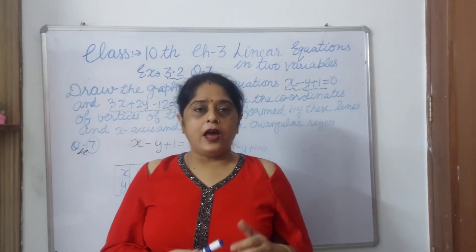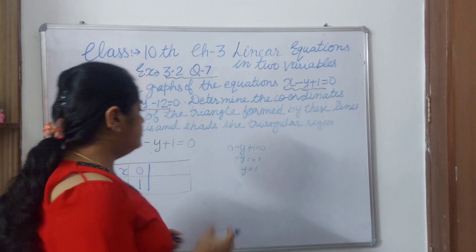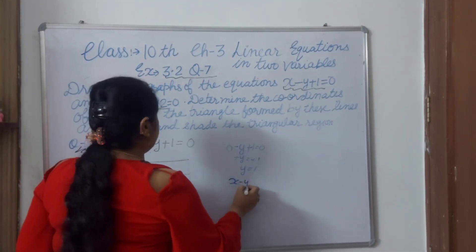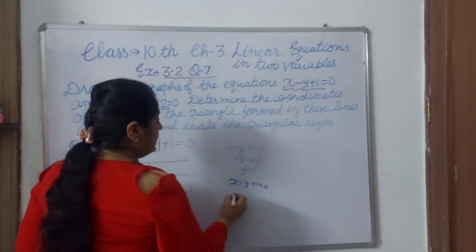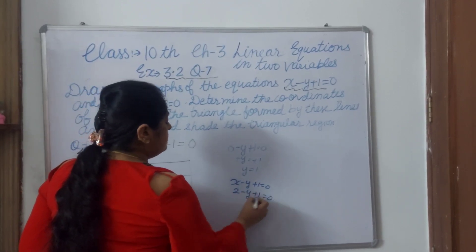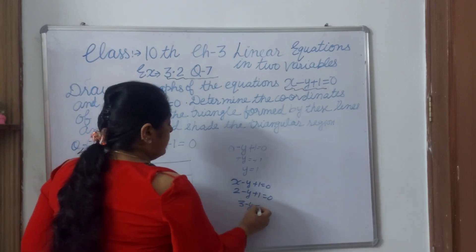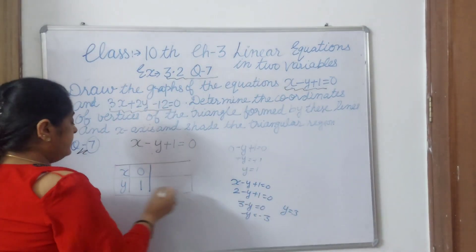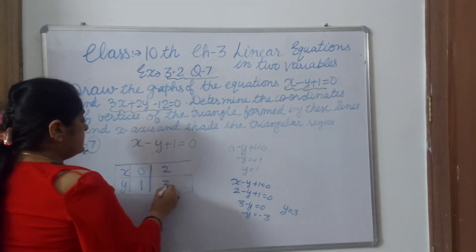I am taking 2. Now you can take x value 2, any value you can take. x minus y plus 1 equals 0. I am taking x as 2, so 2 minus y plus 1 equals... 3 minus y equals 0. Minus y equals minus 3, and y equals 3. If I am taking x as 2, y is 3.